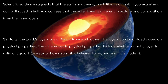Scientific evidence suggests that the Earth has layers, much like a golf ball. If you examine a golf ball sliced in half, you can see that the outer layer is different in texture and composition from the inner layers. Similarly, the Earth's layers are different from each other. The layers can be divided based on physical properties — whether a layer is solid or liquid, how weak or strong it is, and what it is made of.